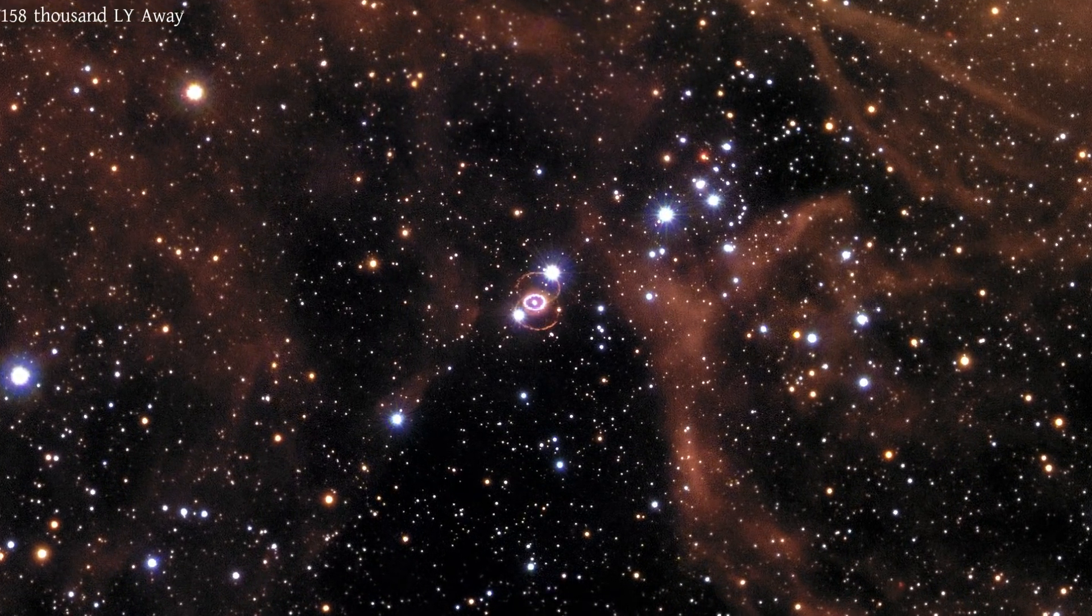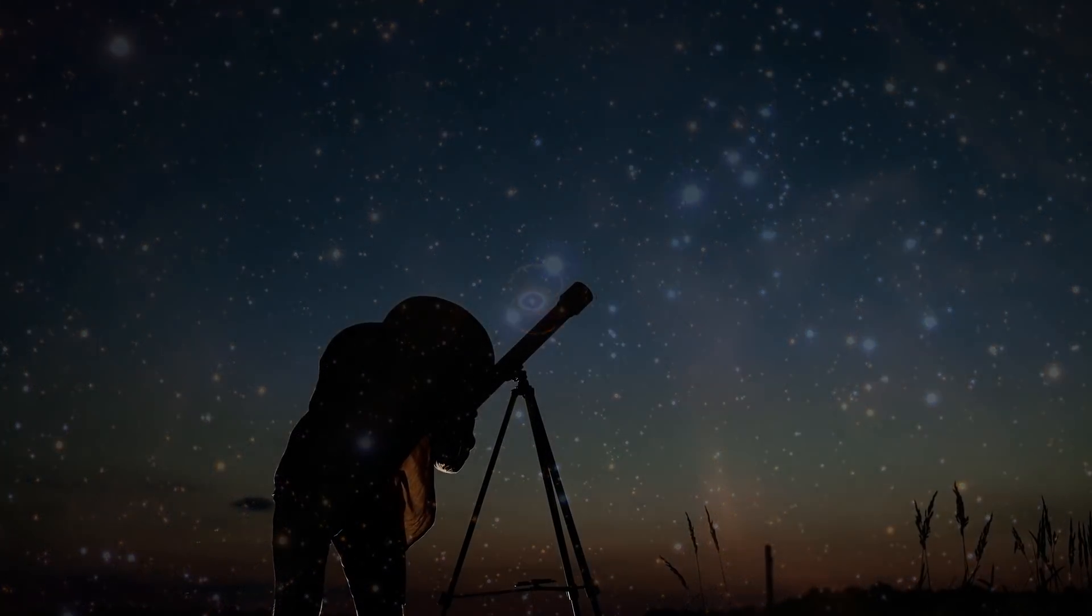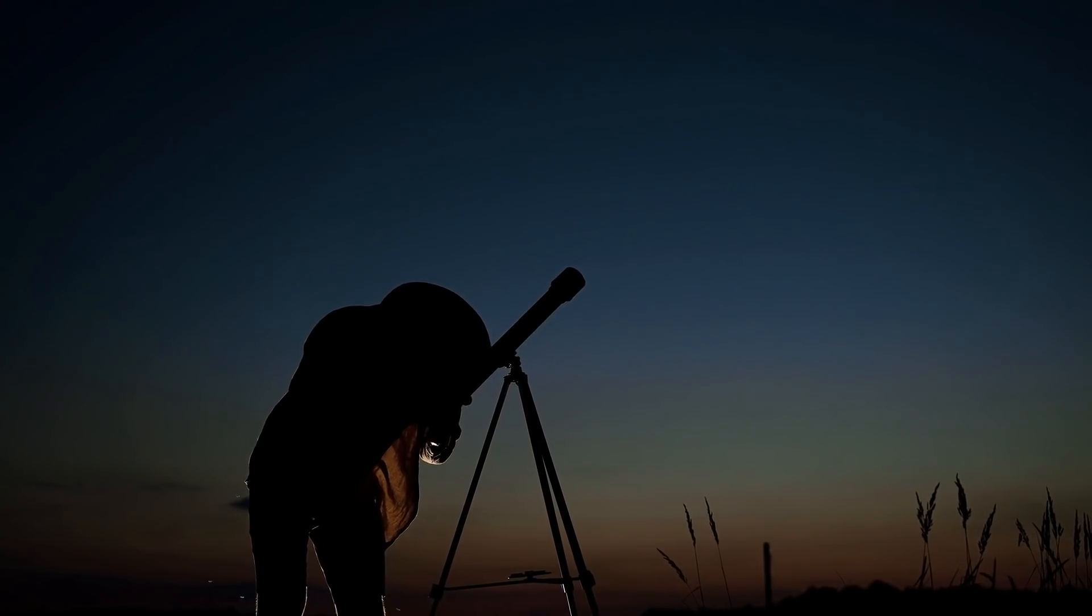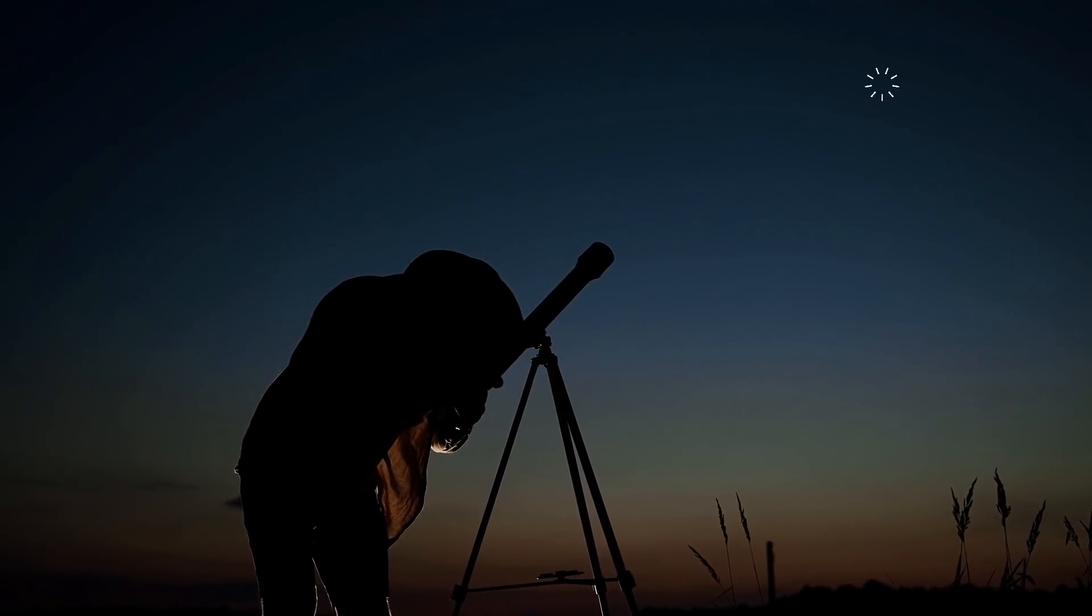During the peak brightness, the supernova reached an apparent brightness of 3. That means you could have seen it using the naked eye, but it would have just looked like another star in the night sky.